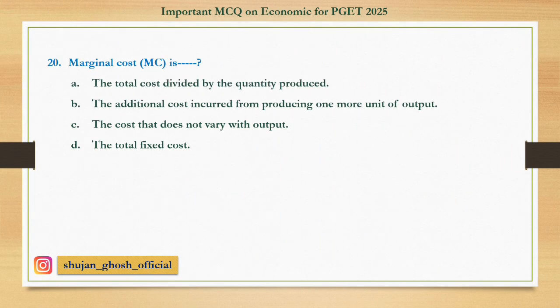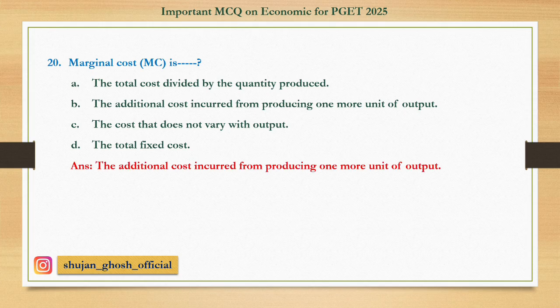Question number twenty: Marginal cost is — option A: the total cost divided by the quantity produced; B: the additional cost incurred from producing one more unit of output; C: the cost that does not vary with output; D: the total fixed cost. Answer: the additional cost incurred from producing one more unit of output.